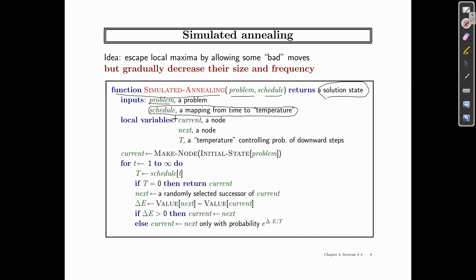Then we've got some local variables: current, next, both are nodes, and T is something which we call the temperature or the controlling probability of downward moves. So we start similar to hill climbing. We create an initial node and then we assign the T, the temperature with the schedule based on T, which is the current loop variable. So in the start it will be one.